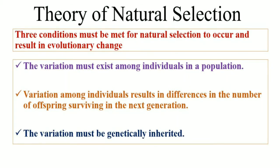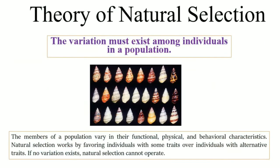Third, these variations must be genetically inherited. If the variations or traits have a genetic basis that can be passed on to the next generation, then natural selection will occur and result in evolutionary change.